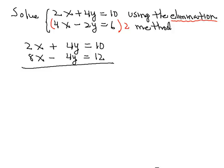So you can see now that if we add the two equations, the y terms will drop out. And we're left then with 10x is equal to 22, or x then is equal to 22 all over 10. And if we reduce that, we're going to get 11 all over 5.